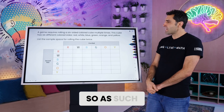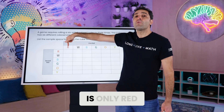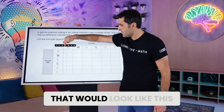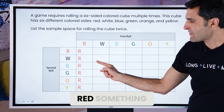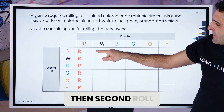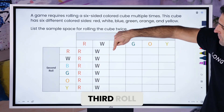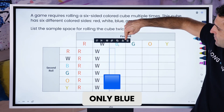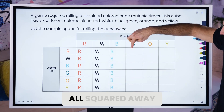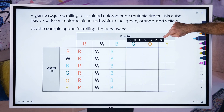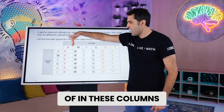Let's imagine that the first roll is only red — that would look like this: red-something, red-something, red-something. Then the second group, only white. Third group, only blue. So let's get the first rolls all squared away. There — all the first rolls are now taken care of in these columns.